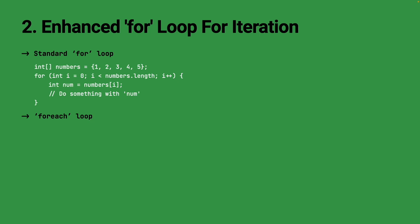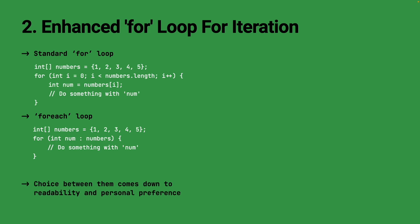The for-each loop comes to the rescue. Introduced in Java 5, it provides a more concise and readable way to iterate over arrays, collections, and other iterable objects. With the enhanced for loop, you can directly access each element without the need of an index variable, which makes the code cleaner and easier to read, reducing the chance of introducing off-by-one errors. In most cases, the performance difference between the traditional for loop and the for-each loop is negligible.